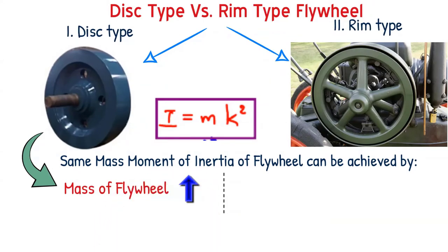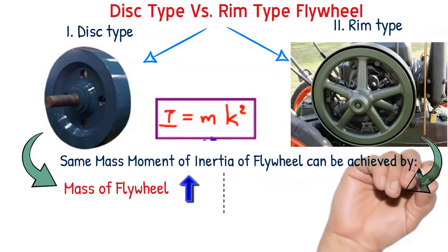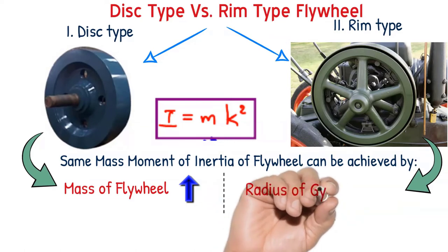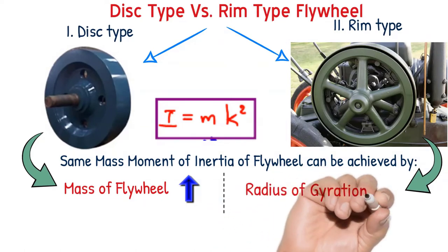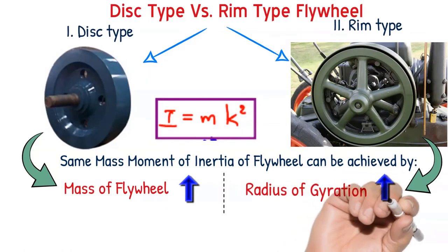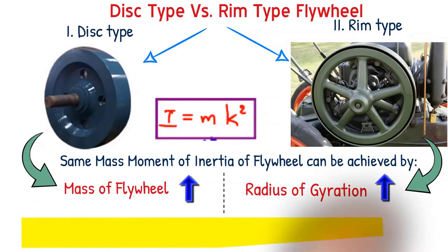That is the logic that is involved in the design of disc type. The second option: we will obtain the same I value by having lesser mass of the flywheel, but with higher radius of gyration. That is the logic involved in the rim type.